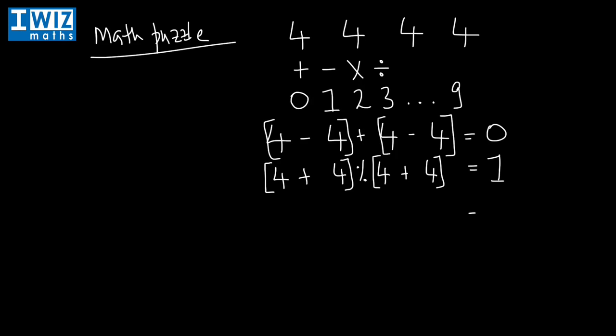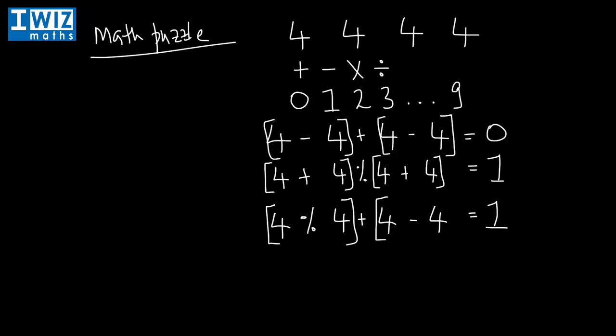Let's try and get to one in another way. We can do four divided by four, which gives us one, and then add four minus four to it. Four divided by four is one, plus four minus four is zero, so that's one plus zero equal to one. The lesson learned here is that the way to get to the answer may not actually be unique.